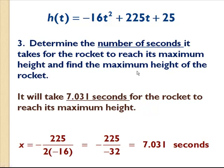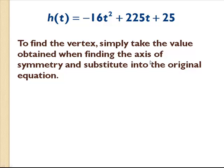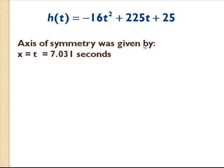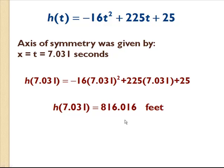For the second part, we want to know what the maximum height actually is. We know how long it takes to get there, but we need to find the height. We take the axis of symmetry value, t = 7.031 seconds, and plug it into our original equation. Working through the algebra, h(7.031) equals approximately 816.016 feet.